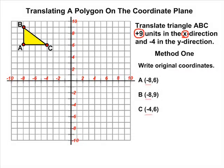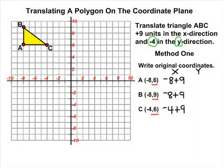If that is the case, all we would have to do in that situation is to add 9 to all of the x values since we are moving our object 9 units in the x direction. And since we are moving our object minus 4 in the y direction, we simply subtract 4 from all of the original y values.